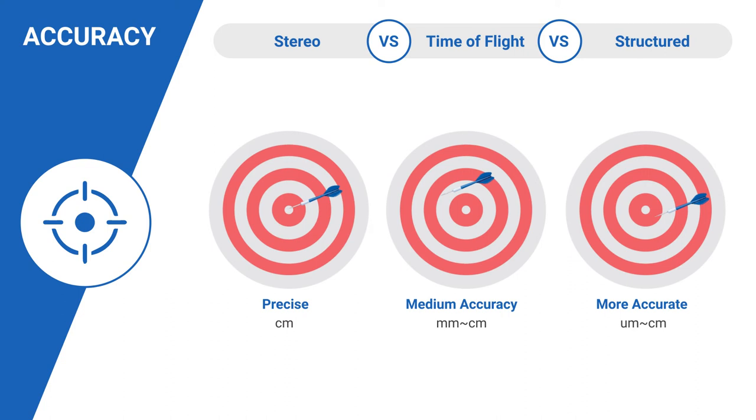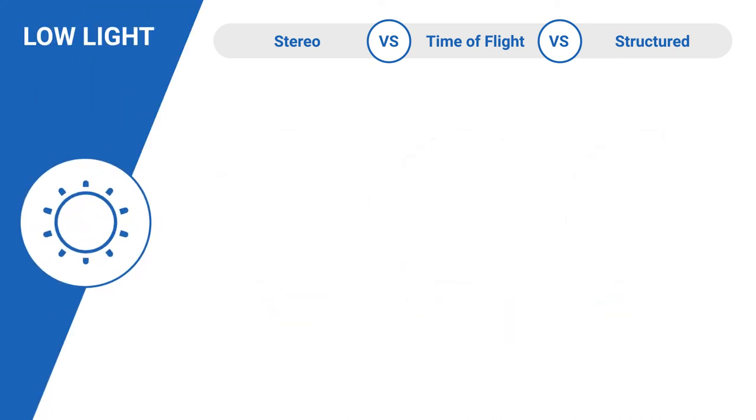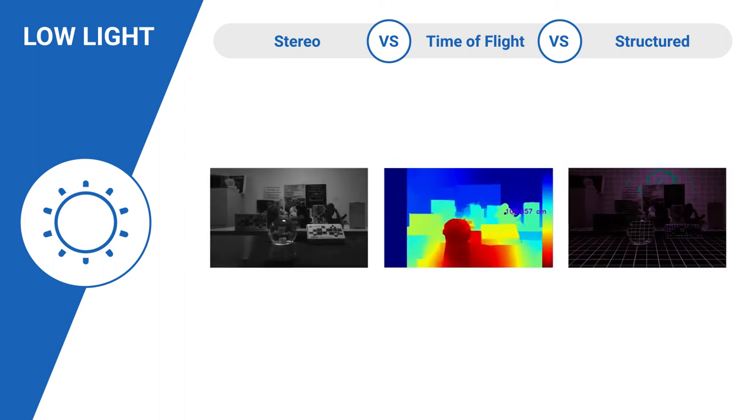Even when it comes to range, Structured Light imagers and time-of-flight cameras are far better compared to stereo cameras. The next parameter is low-light performance. Here as well, Structured Light and time-of-flight technologies beat stereo cameras. Since time-of-flight cameras use VCSEL as the light source, they do not require any ambient light for optimal performance.